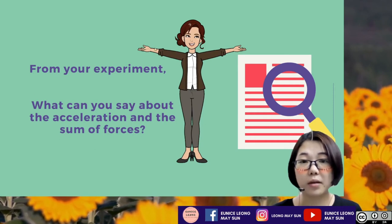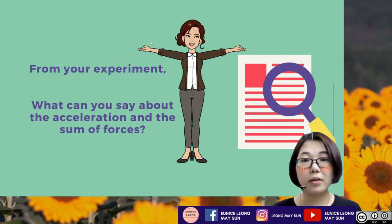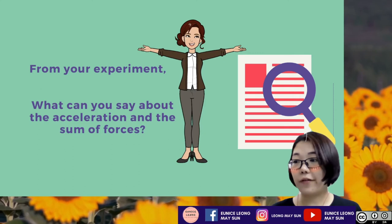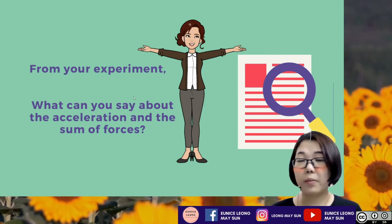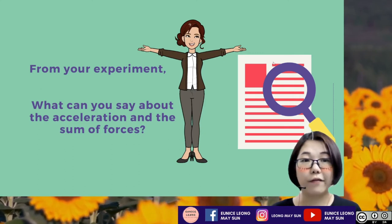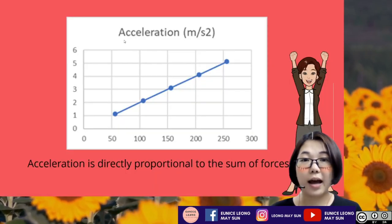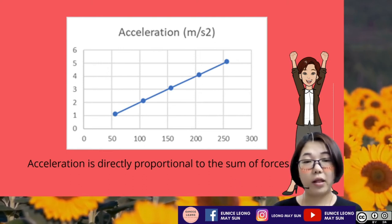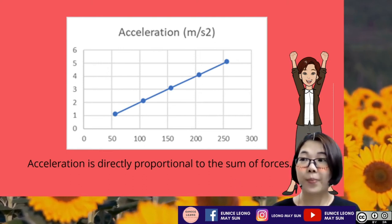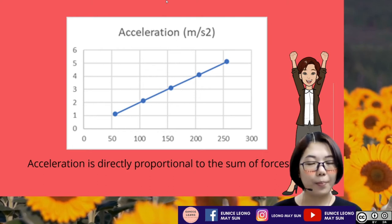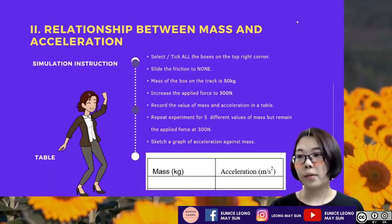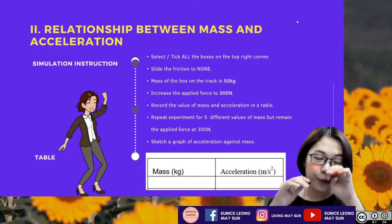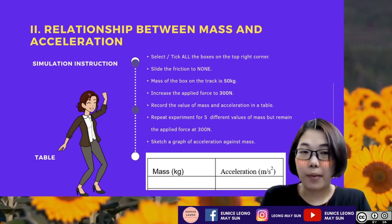So this actually proves the first part of Newton's second law to be correct. From the experiment, we found that acceleration is directly proportionate to the sum of the forces. That proves the first part of Newton's second law.